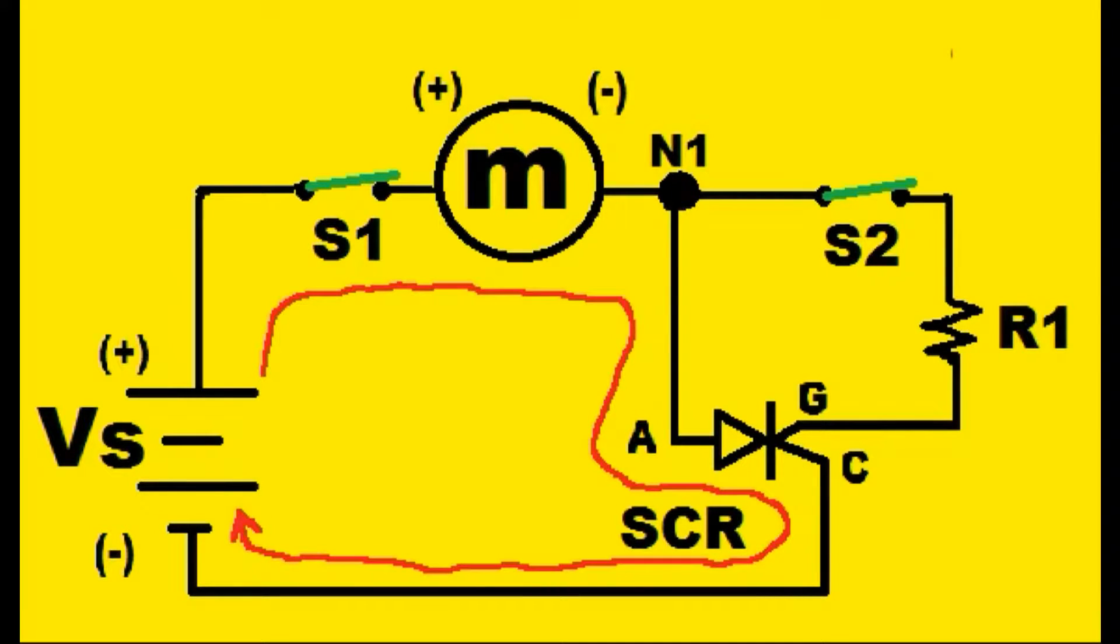What about the S2 switch now? This guy's status of closed or open is no longer even important. It can be open or closed. Because when G got hit by the current, it opened up and became a latching device. So the gate on the SCR is going to remain open, and that's called a latch.